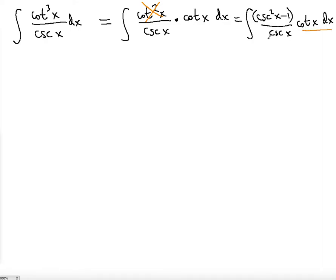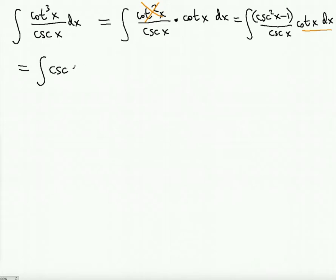So let's see. Now the first integral simplified version will be cosecant squared divided by cosecant gives you the net factor cosecant, multiplied to the cotangent.